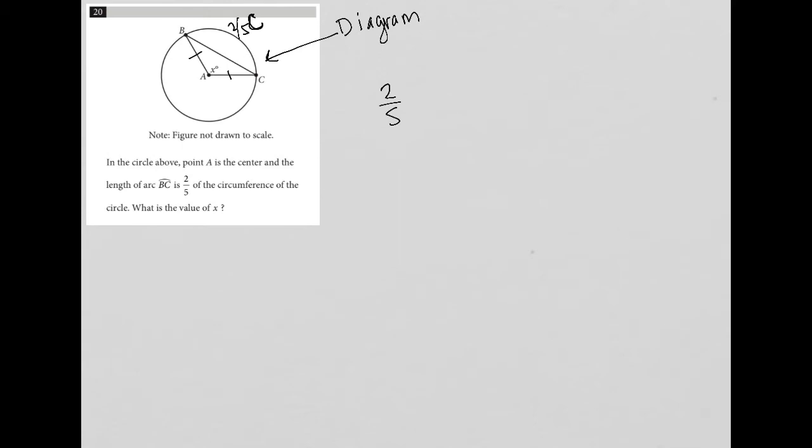I'm gonna just write that over here as well. So two fifths times the circumference is equal to two over five times two pi r because the circumference of a circle, the formula for the circumference of a circle is two pi r. And then if I simplify this, I can treat two pi r as two pi r over one, which means my simplified fraction here would be four pi r over five. So that's the length of arc BC.